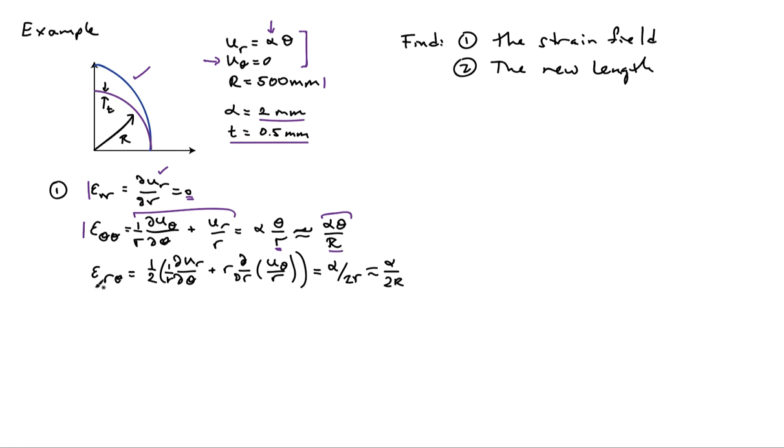The shear strain in the band epsilon_r_theta, so the tensorial shear strain, is given by this complicated looking relationship here. But again we have expressions for u_r and u_theta so we can plug in and perform the calculation and we get alpha over 2r. Again this is little r position of material points inside the band and for the same reasoning as we had with the normal strain in the tangential direction we'll approximate this by alpha divided by 2 capital R. So we'll take it as a constant.